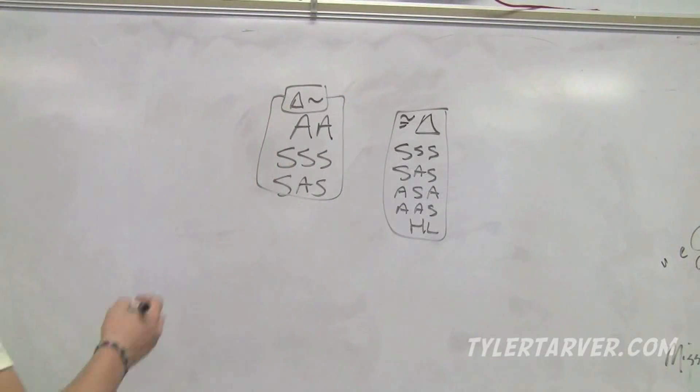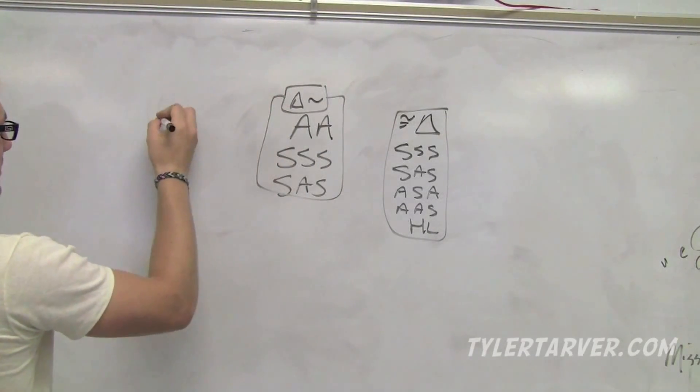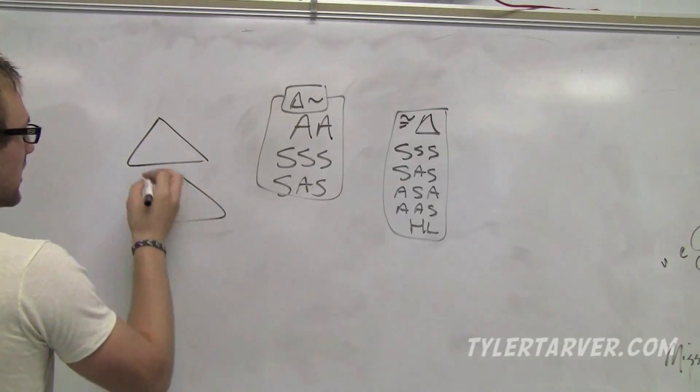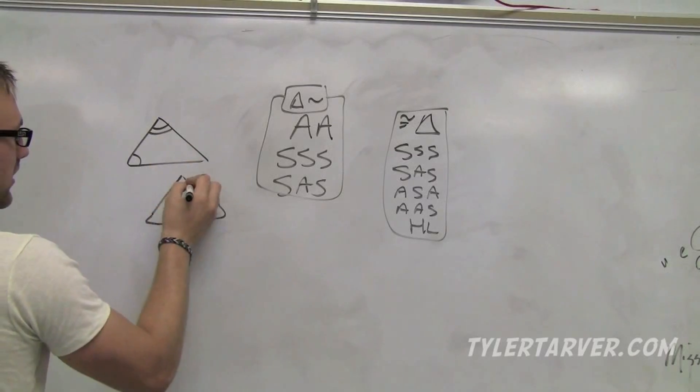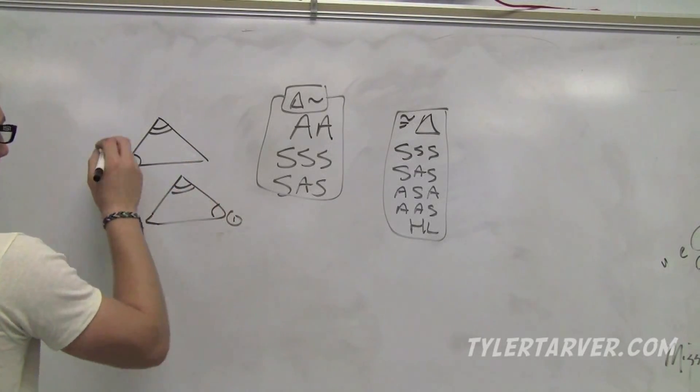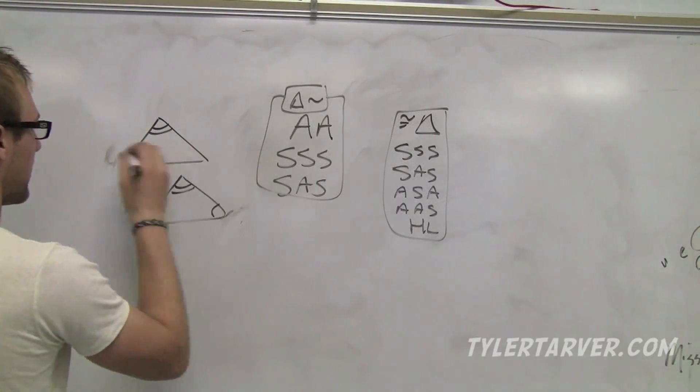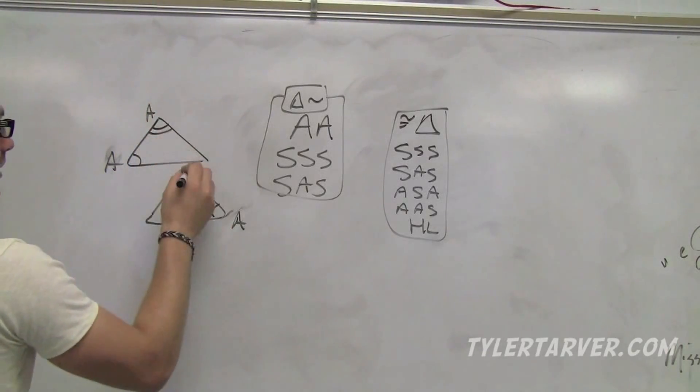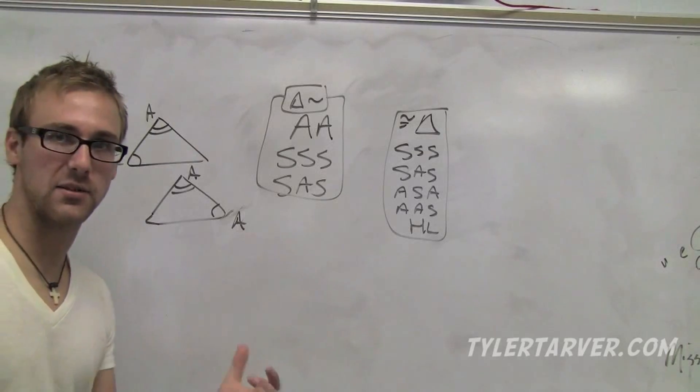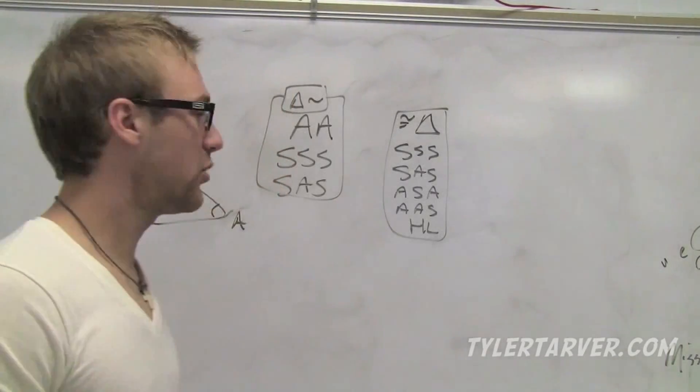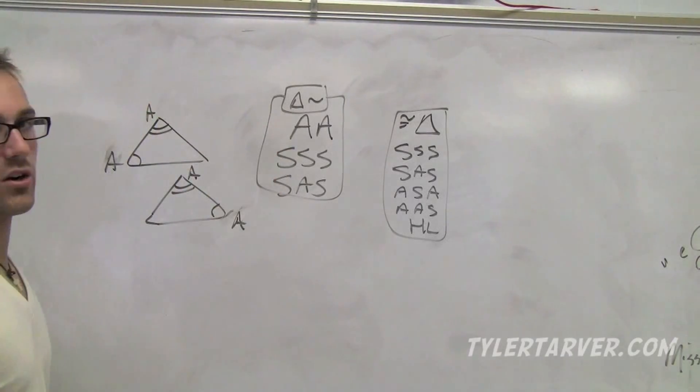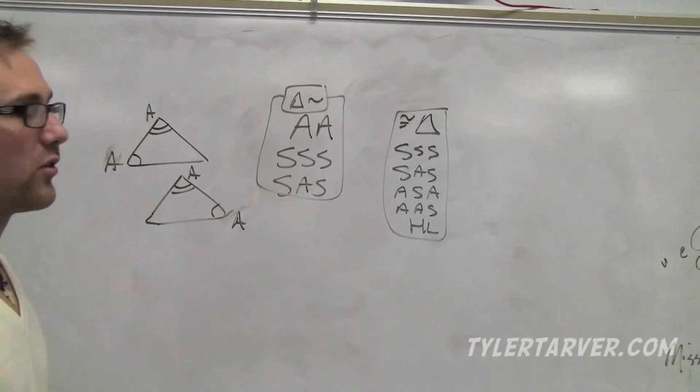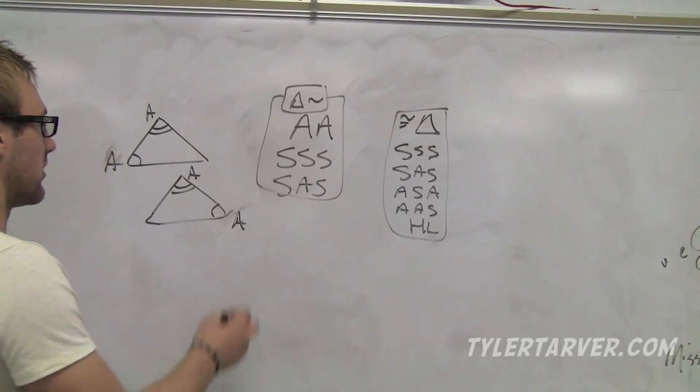One way to do it is angle-angle theorem. The angle-angle similarity theorem means if you have two triangles and you know that this angle is congruent to another angle here, we have one angle that's congruent. Then we know these angles are congruent. That means these two triangles are similar, because what do we know that third angle has to be? Congruent, obviously. If you cut the same amount out of 180 from these two, you're left with the same amount. All we need is two angles that are congruent, and we know these triangles are similar.